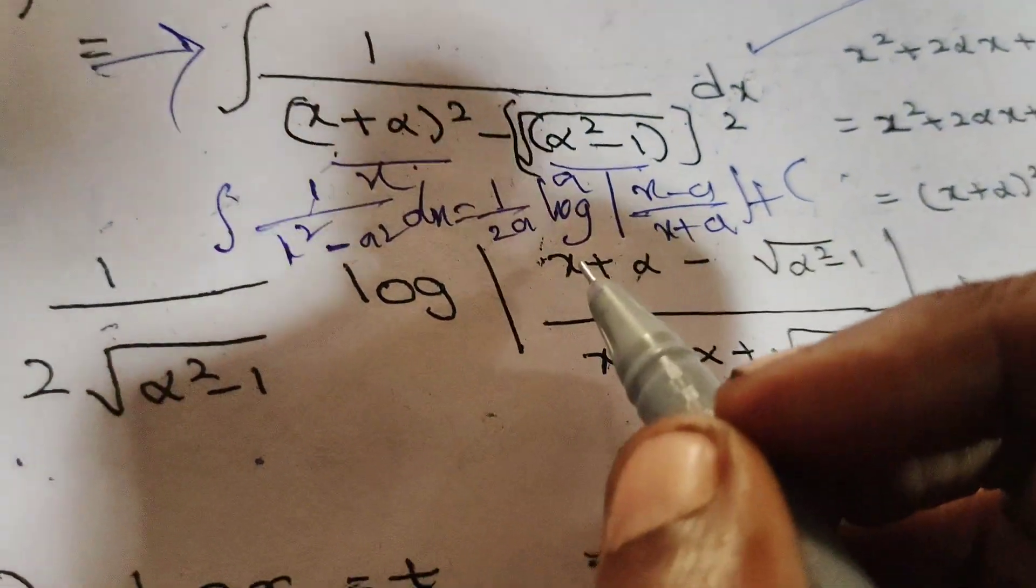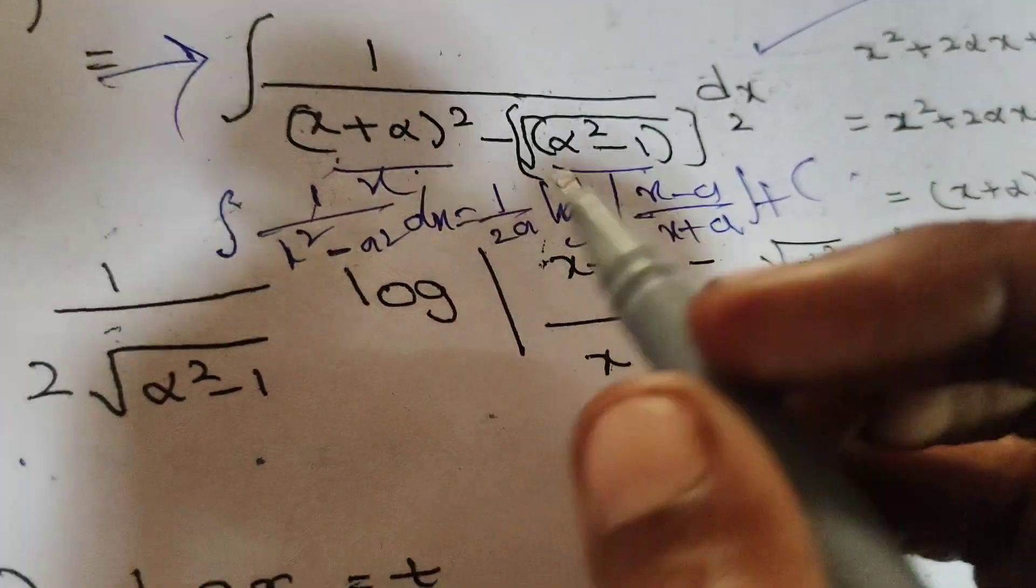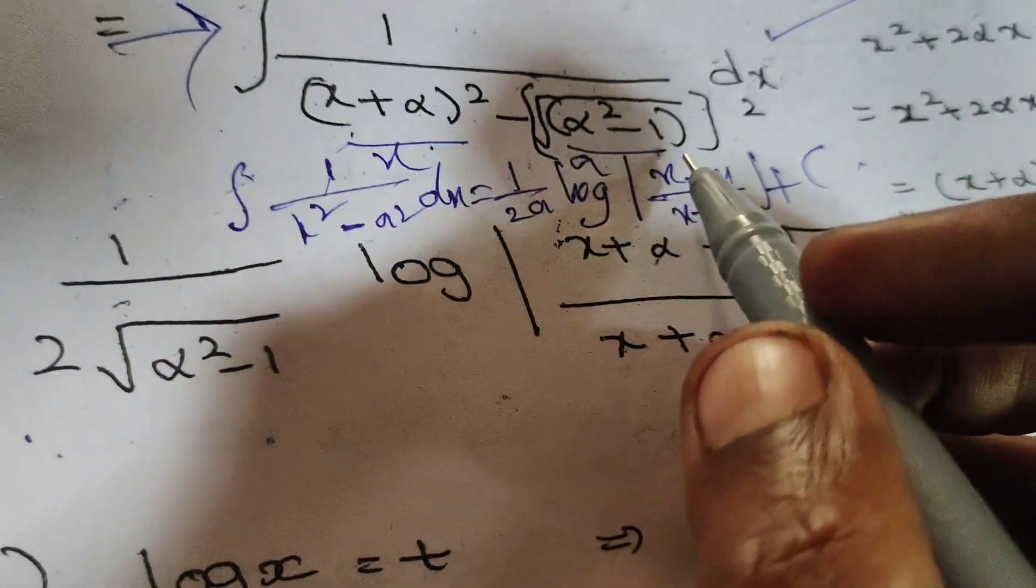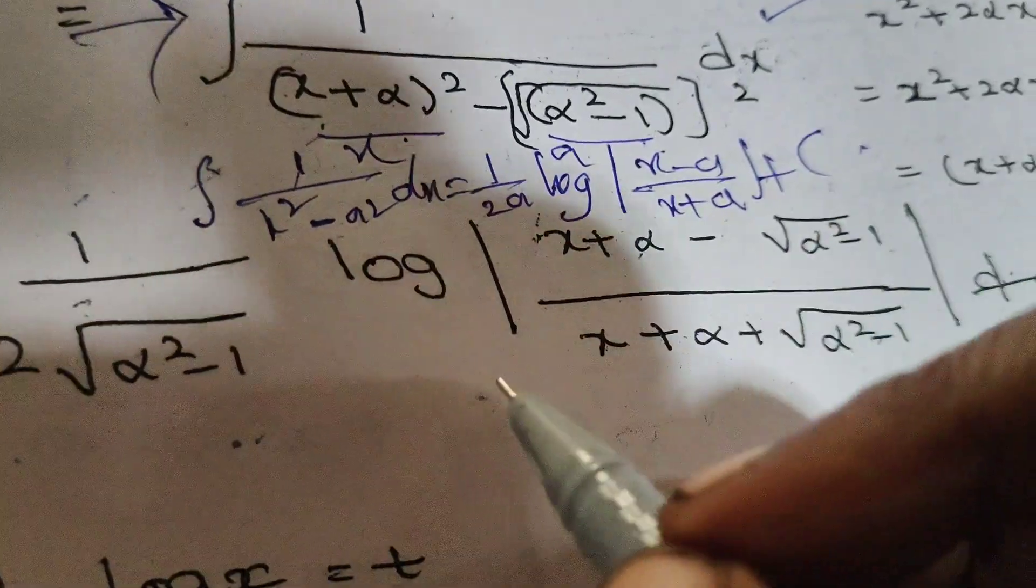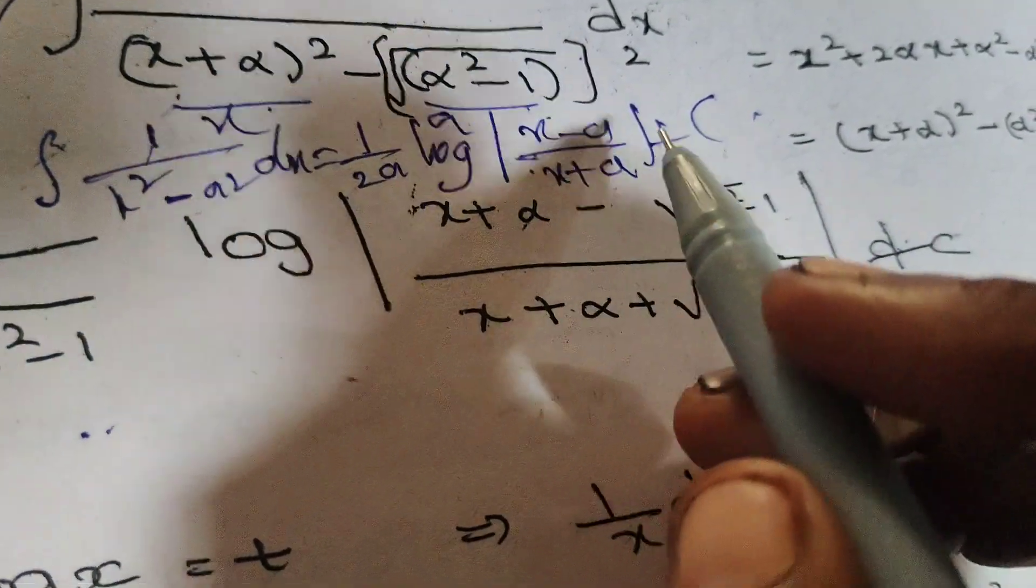1 by 2 into a... sorry, a means root of alpha square minus 1. Root of alpha square minus 1 log of x minus a.